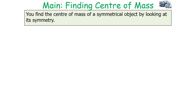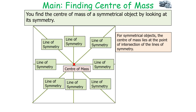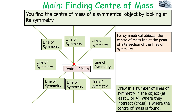You can find the centre of mass of a symmetrical object by looking at its symmetry. For symmetrical objects, the centre of mass lies at the point of intersection of the lines of symmetry. Looking at this square, you can draw in a number of lines of symmetry — at least three or four — and where they intersect or cross, that is where your centre of mass will be. For this square, it is at the dead centre.